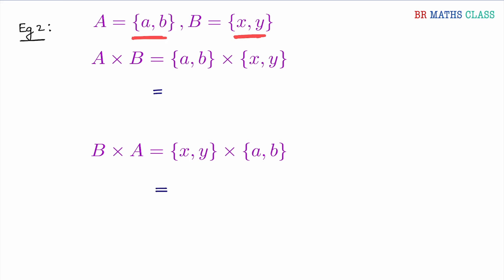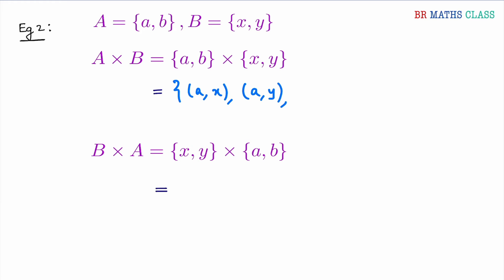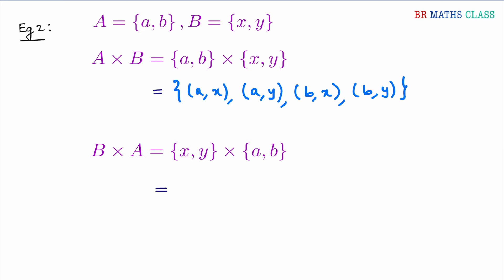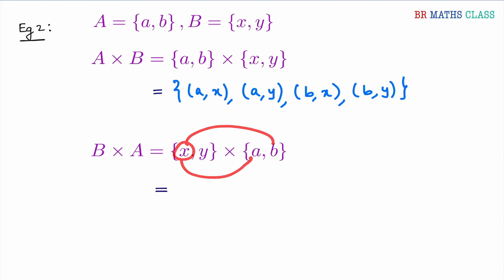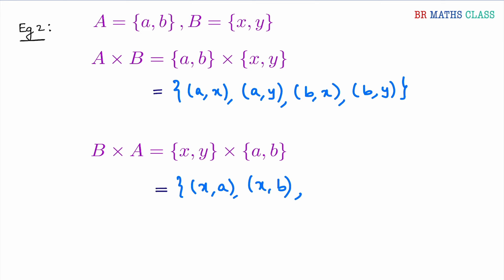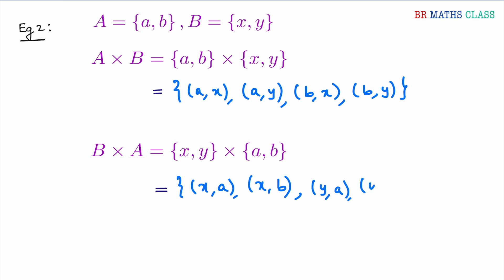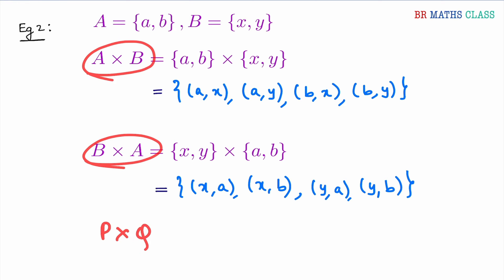Let's see one small example. Set A is {a, b} and set B is {x, y}. To calculate A cross B, take one element and pair with all elements of the other set: (a,x), (a,y). Then take the next element: (b,x), (b,y). So this is A cross B. For B cross A, take first element and pair: (x,a), (x,b), then the next element: (y,a), (y,b). Now you know how to calculate A cross B, B cross A, or P cross Q.